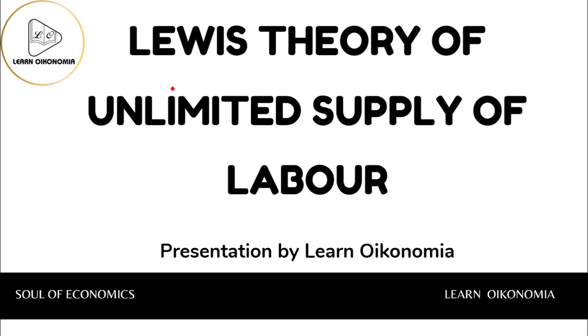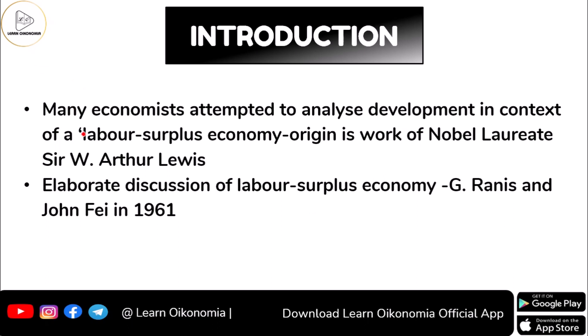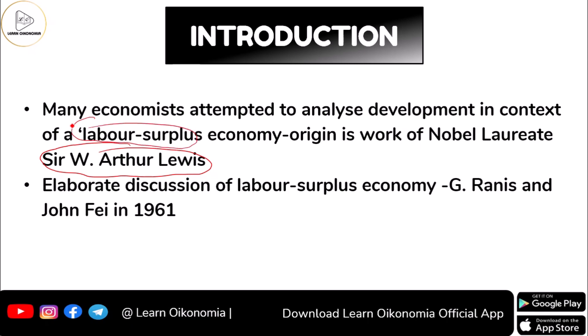Hello, welcome back to Learn Economia. Today in this session we are going to discuss the famous Lewis Theory of Unlimited Supply of Labor. This theory is put forward by the very famous economist Sir W. Arthur Lewis, who says that development can happen in an underdeveloped economy with the surplus labor that is generated in the agriculture sector. This discussion taken by Lewis was later extended by two other economists, Ranis and Fei, in 1961.